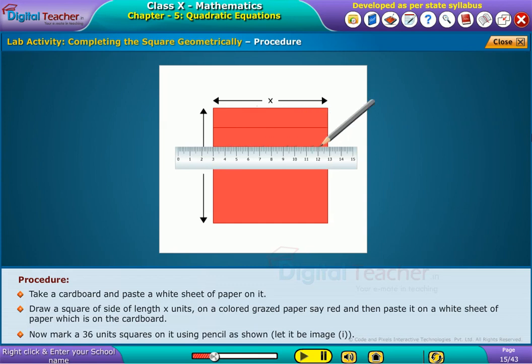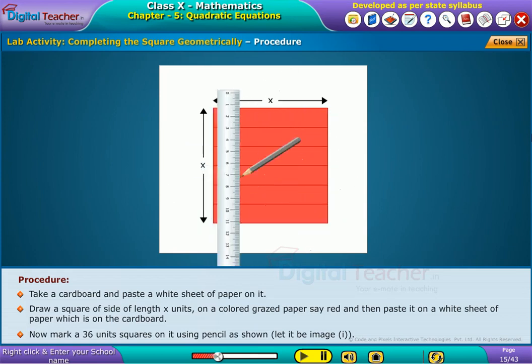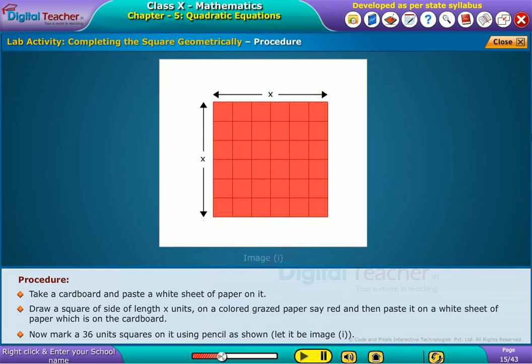Now mark a 36 unit square on it using pencil as shown. Let it be image one.